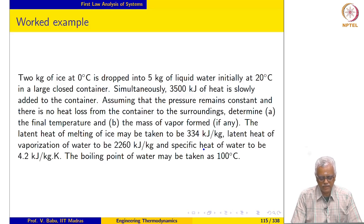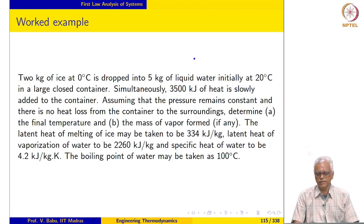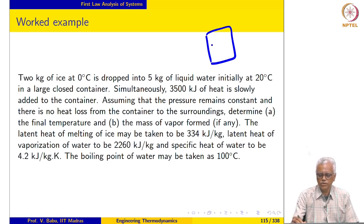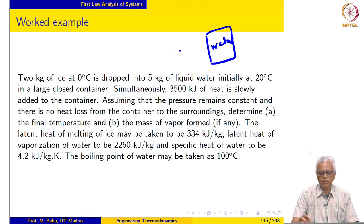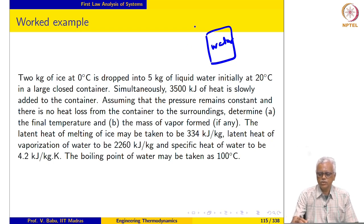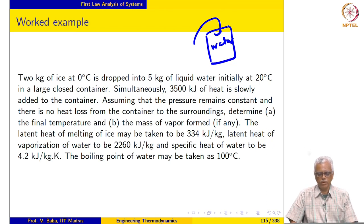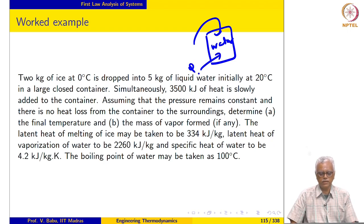The first example actually involves liquid and a solid. We have 2 kg of ice in a container. The container initially contains liquid water at 20 degrees Celsius, and 2 kg of ice at 0 degrees Celsius is dropped into this container of liquid water. We also add 3500 kilojoules of heat to the container.